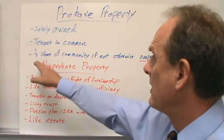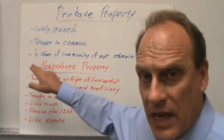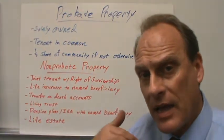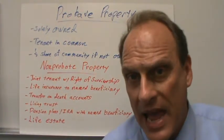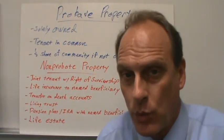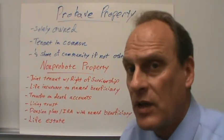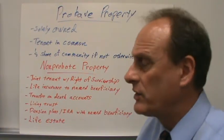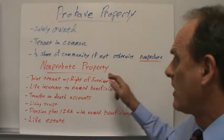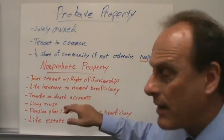And then for husbands and wives in Texas, a spouse's one-half community property would be probate property unless it is held in an arrangement of non-probate property.